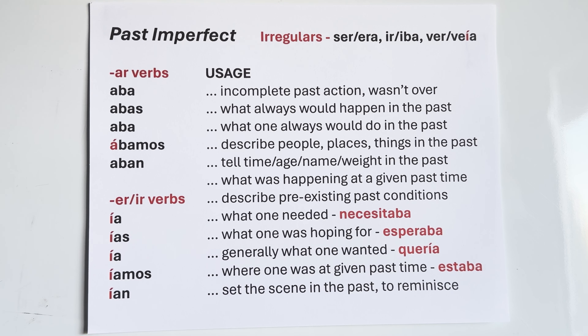Do we have irregulars in the past imperfect? Yes, but only three — the least amount of any tense. Only three irregulars in the past imperfect, and you see them at the top of the sheet.